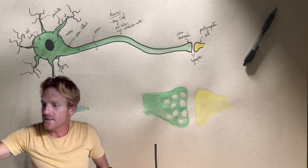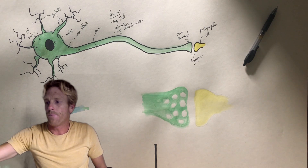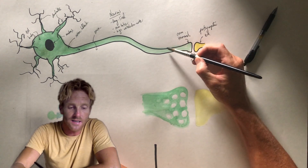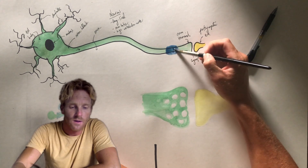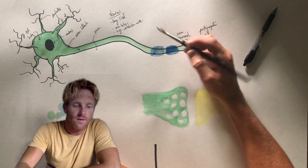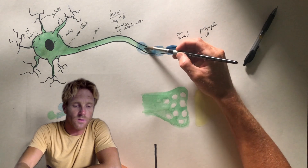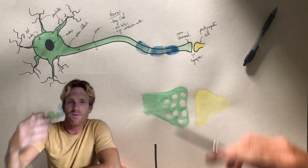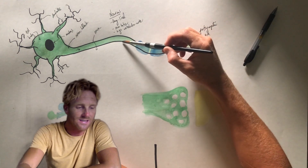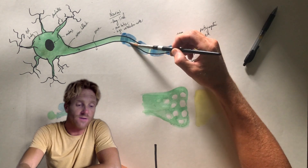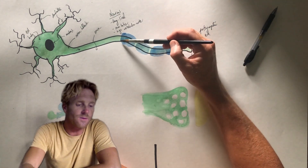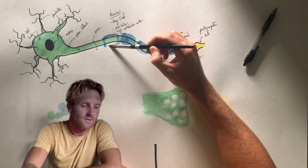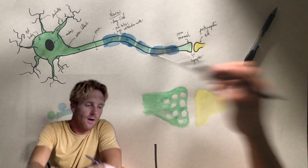A lot of times neurons are surrounded by supportive cells that make signals travel faster. In the peripheral nervous system, these supportive cells are called Schwann cells. They are almost like weird pancake-looking cells that wrap around the axon many times — almost like a roll of tape — which helps insulate the electrical action potential signal so it travels faster down the length of the axon. That's the difference between neurons that send signals at 40 meters per second versus 2 meters per second.